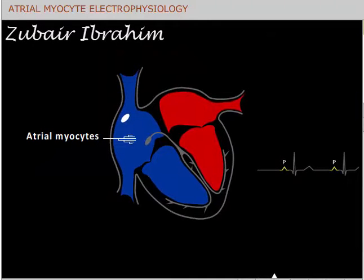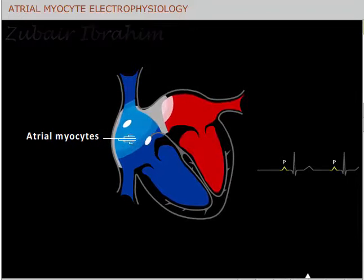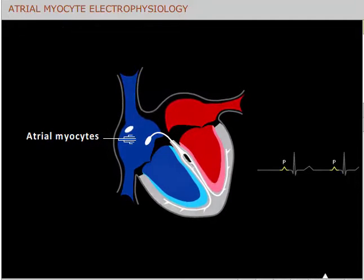The action potentials recorded in atrial myocytes reflect the sum of all ion movements through these various ion channels, transporters, and exchangers.